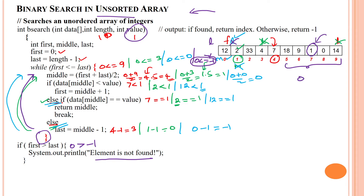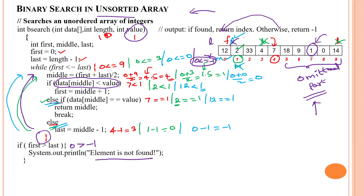This is what happens when your array is unsorted. The element is available in the omitted portion of the given array. When we update first and last index based on conditions, there is a possibility your element falls in the omitted portion. Here 1 is in the omitted right portion, but we kept searching the left side. So binary search will not work if your array is unsorted — you cannot apply binary search on an unsorted array. Thanks for watching.